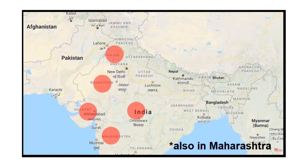If you are in India, you will see locusts in Rajasthan, Punjab, Gujarat, Madhya Pradesh, and Maharashtra. These places are in the western parts of India.